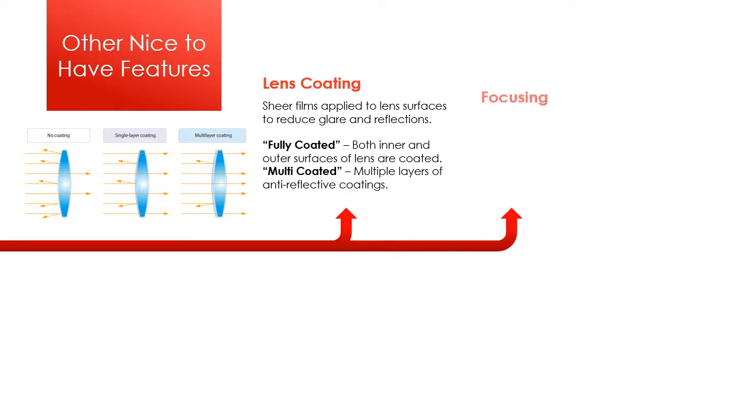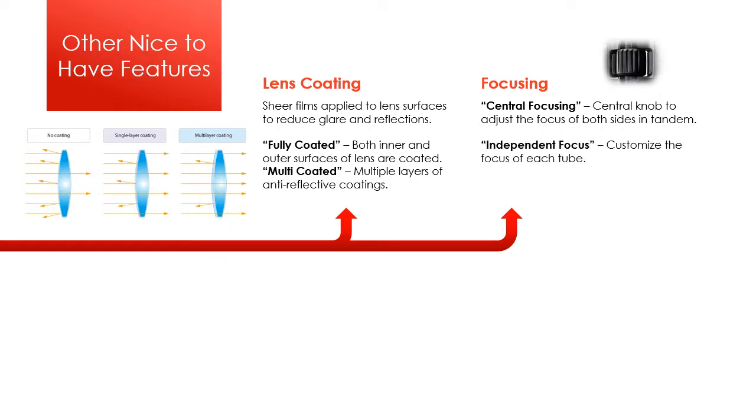Binoculars have different focusing mechanisms. Most binoculars have a central knob to adjust the focus of both sides in tandem. Independent focusing allows customizing the focus of each tube of the binoculars. Focus-free binoculars don't have any focusing mechanisms, relying on your eyes to focus the image.